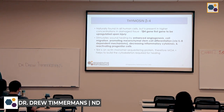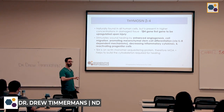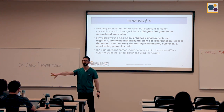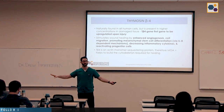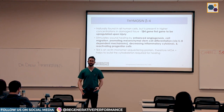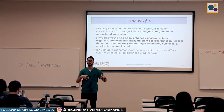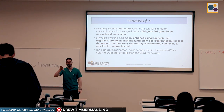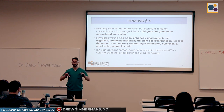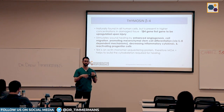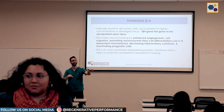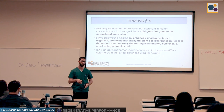Its mechanism of action: TB4 is the principal actin-sequestering protein, which means it binds to actin and helps move the cell. It is responsible for helping build the extracellular matrix cytoskeleton. There's a lot of interesting research on TB4 with stem cells because stem cells need a scaffold — they need biophysical forces to know what type of cell to become and where to migrate — and TB4 can help with that.